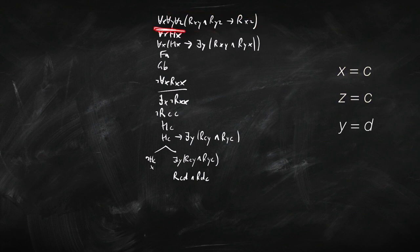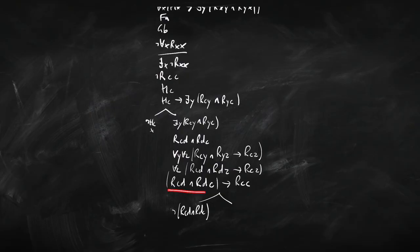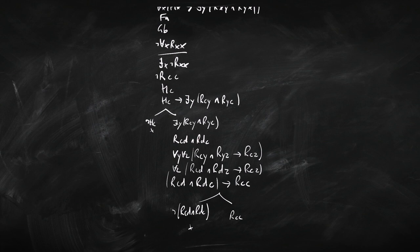So this is the instance with c for x, d for y, and c for z. This is an if-then, and now we're basically dealing with propositional logic. We branch left and right. On the left we get the negation of the antecedent, which closes straight away — that contradicts directly. On the right we get R, c, c. That's what we wanted, because it contradicts with 'not R, c, c' that we had earlier. So that branch closes, and we've got a finished closed tree. All branches closed — this is a proof of that conclusion from those premises.